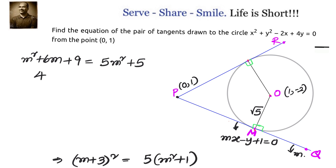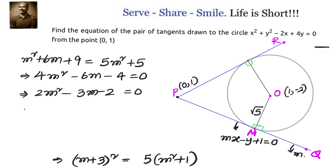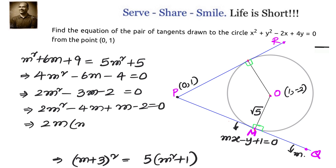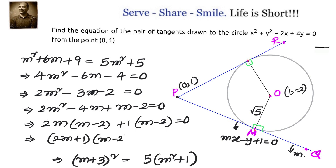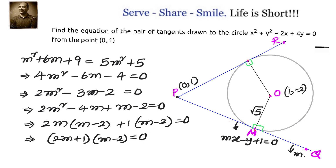Expanding and simplifying gives 4m² - 6m - 4 = 0. Dividing by 2: 2m² - 3m - 2 = 0. The sum is -3 and product is -4, so we split as -4m and +m: 2m² - 4m + m - 2 = 0, giving 2m(m - 2) + 1(m - 2) = 0. Therefore, (2m + 1)(m - 2) = 0, so m = -1/2 or m = 2.